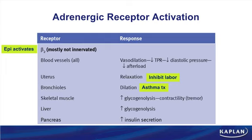Blocking beta-2 receptors primarily affects skeletal muscle and liver, decreasing blood glucose. This is an important concept for non-selective beta-blocker overdose — you will see low blood glucose in those situations.